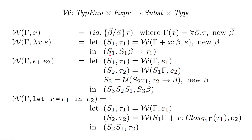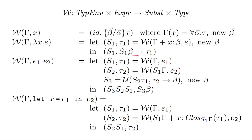The return of function abstraction is S1 and the type S1 applied to beta, going to tau1. It's a function type, so the return type is tau1 — the type of expression E — and the argument type is beta, the fresh variable we assigned to X. Applying S1 to beta captures any constraints discovered during inference; for example, if beta had to unify with an integer, applying S1 gives us integer.